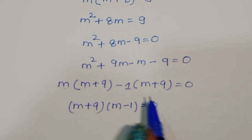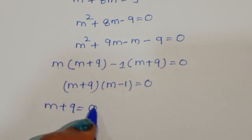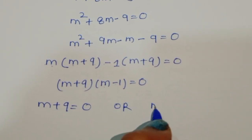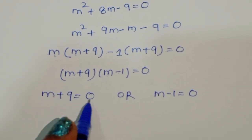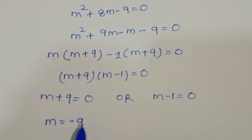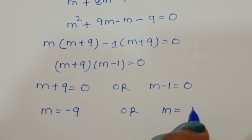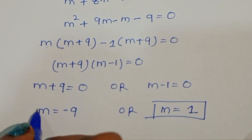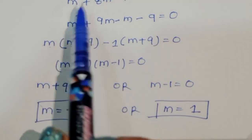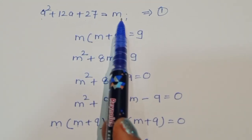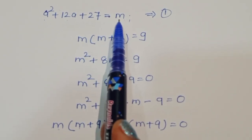We got two equations: M + 9 = 0 giving M = -9, and M - 1 = 0 giving M = 1. From equation 1, M = A² + 12A + 27. Substituting M = -9, we get A² + 12A + 27 = -9.